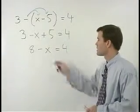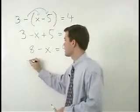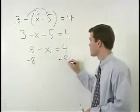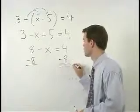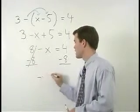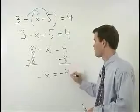To get our x term by itself, we subtract 8 from both sides of the equation, and we get negative x equals negative 4.